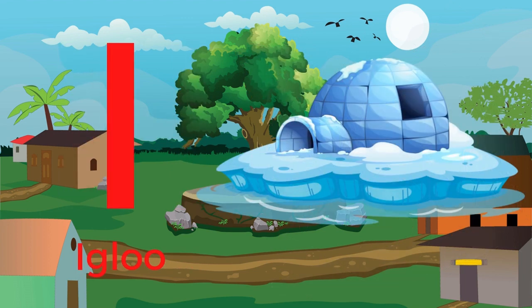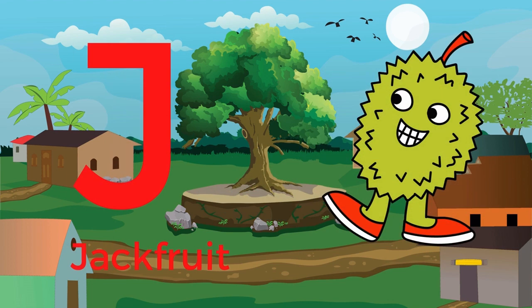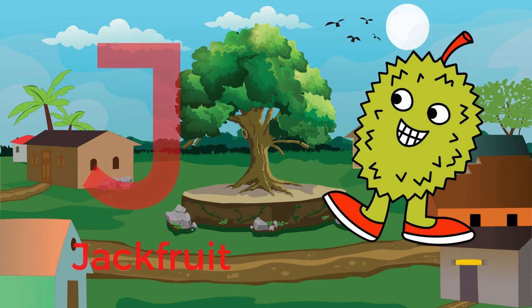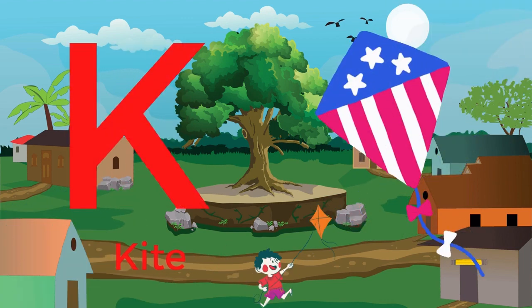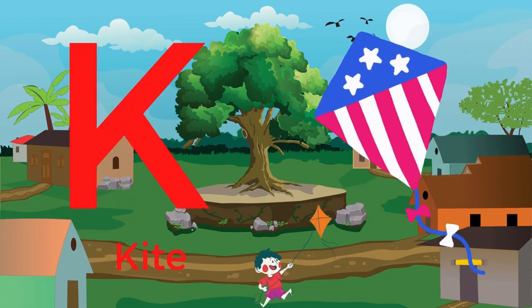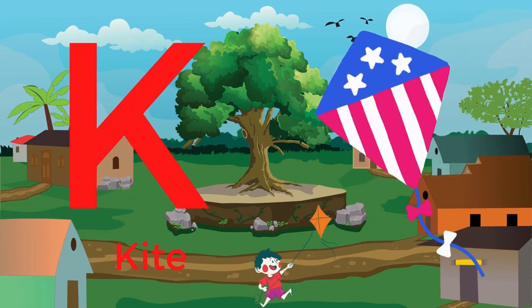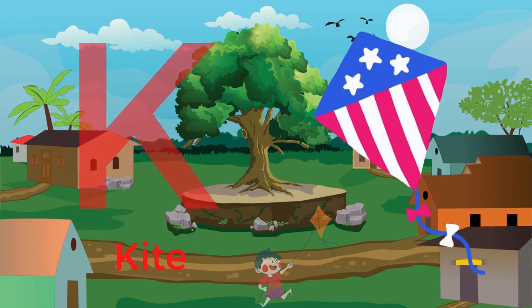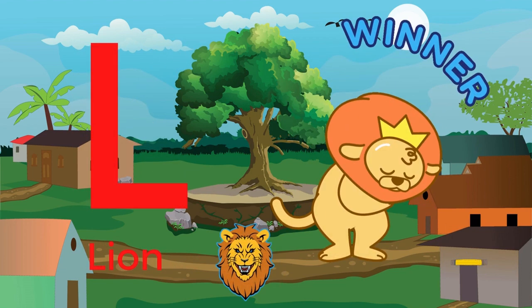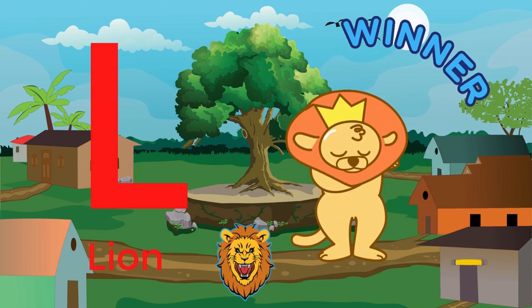I for igloo. J for jackfruit. K for kite. L for lion.